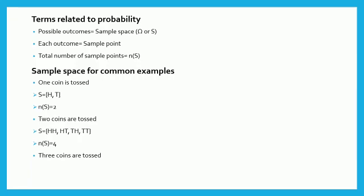Number one, three coins are tossed. Sample space S is equal to curly bracket open, head on three coins, head on first two coins and then tail like this. So, then we will get head on first coin, tail on remaining two coins, and at the end tail on all three coins. So, we have number of sample points n of S is equal to 8.